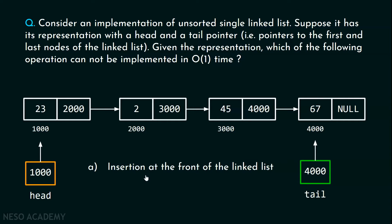Let's consider option A: insertion at the front of the linked list. We already know that insertion at the front of a singly linked list takes constant time. Because we have a head pointer pointing to the first node, creation of the new node takes constant time. After creating the node, we update its link part with the address of the current first node — say address 1000 — then update the head pointer to point to the new node. So insertion at the front takes O(1) time, and this option is incorrect.